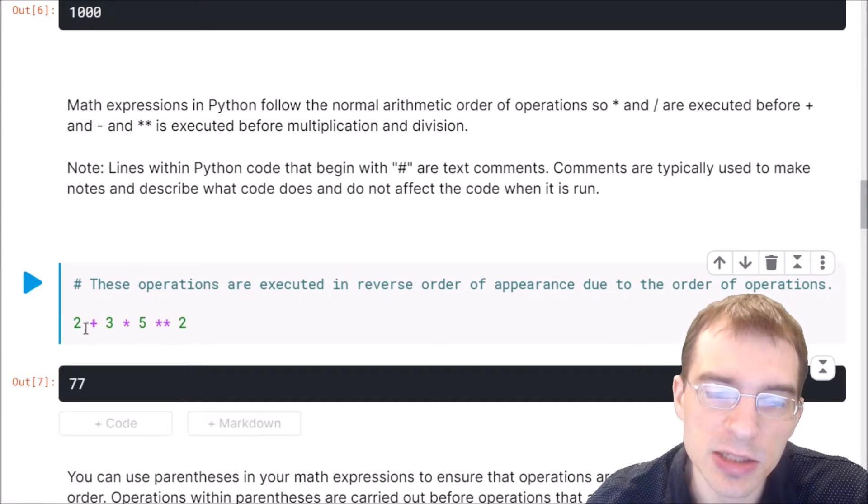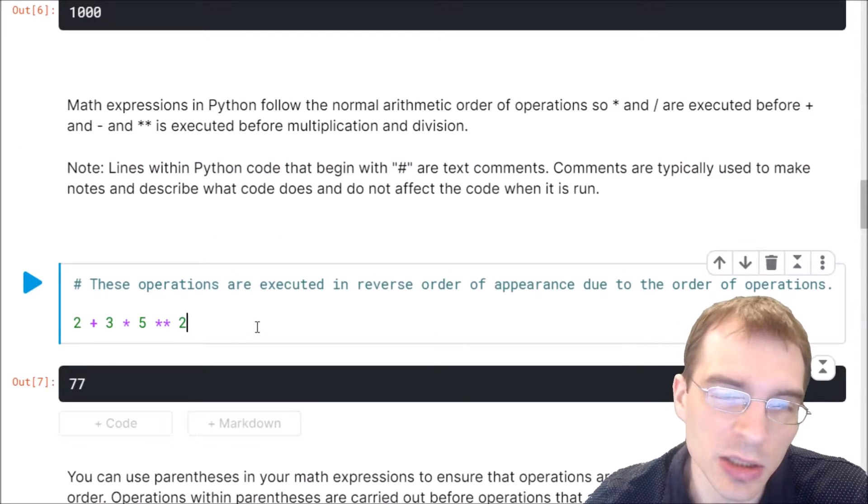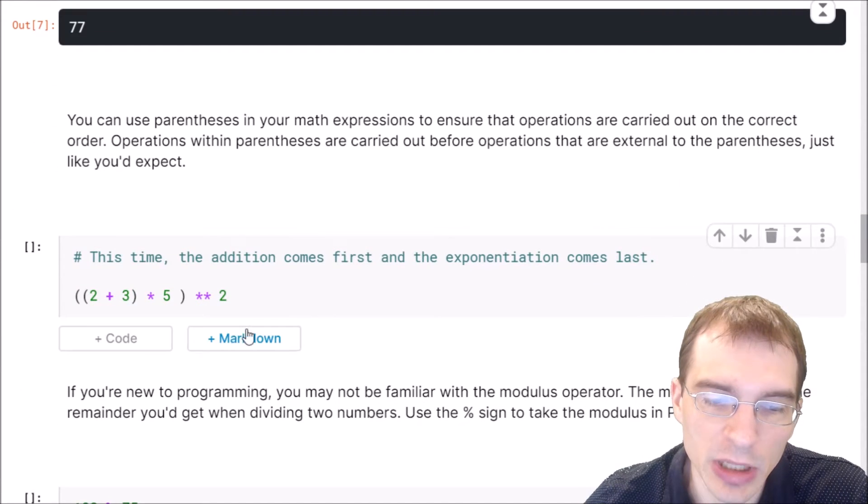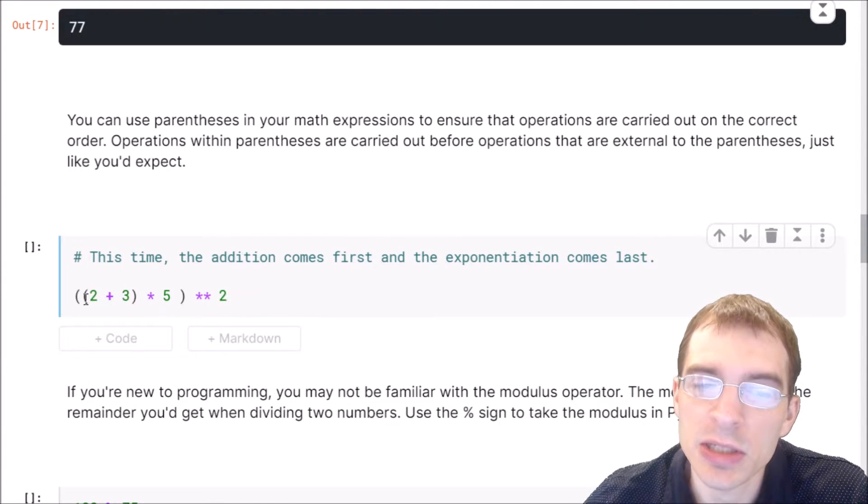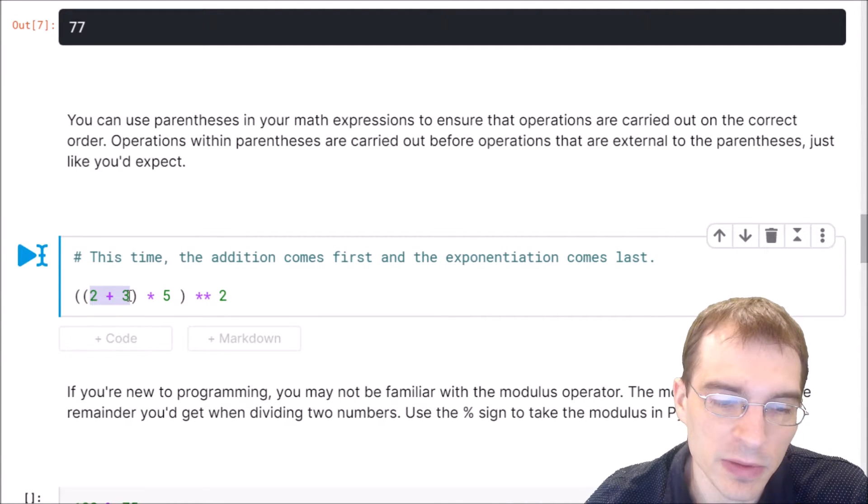If we had wanted to execute that in the order that things actually appeared, you can do that by using parentheses to enforce the proper order of operations as you'd expect in normal math. Here we're saying we'll put parentheses around the 2 plus 3, so that will execute first now. And we're going to wrap that in another parentheses, so this whole block is executing first. Once that's all done, finally we're raising it to the second power. So we're saying 5 because 2 plus 3 is 5, then times 5, so 5 times 5 is 25. And then we're raising 25 to the second power, so that's going to be something like 625.